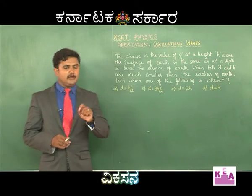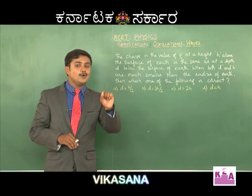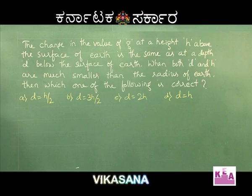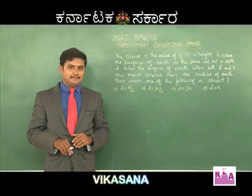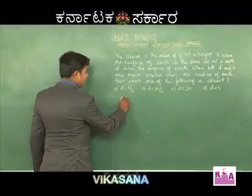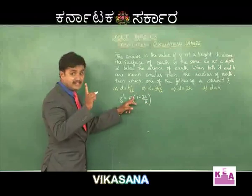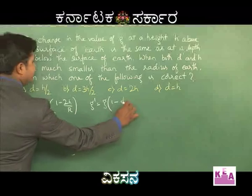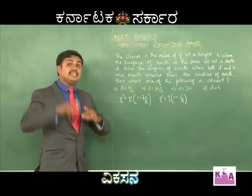Dear students, as we go above the surface of earth, the value of g decreases according to the expression G-dash = G(1 − 2H/R), valid when H is small compared to R as given in the problem. Similarly, with depth, the value of g changes according to the expression G-dash = G(1 − D/R). The problem states that the change in g is the same in both cases.